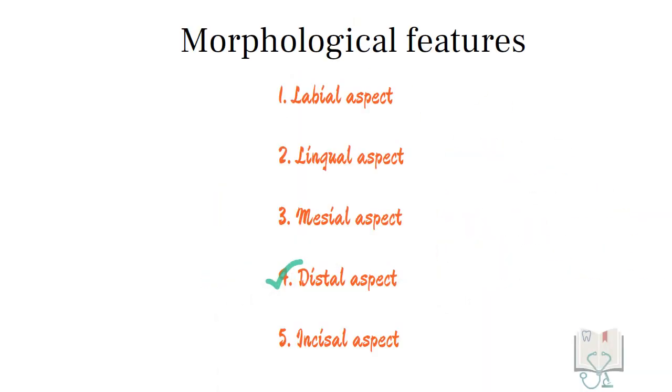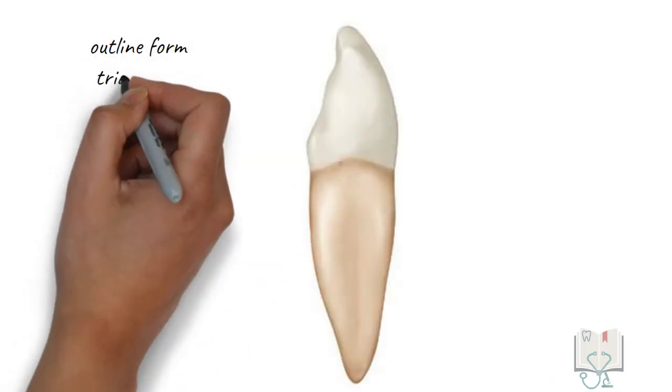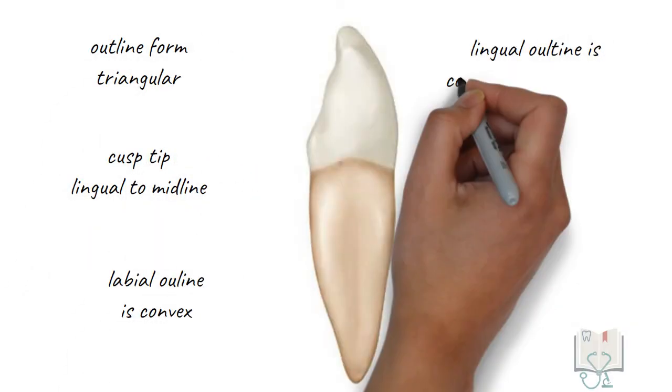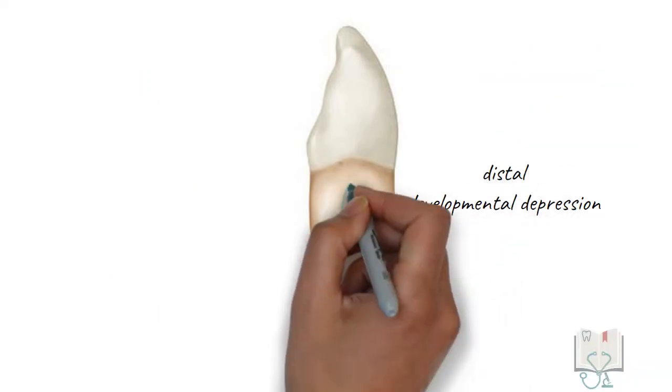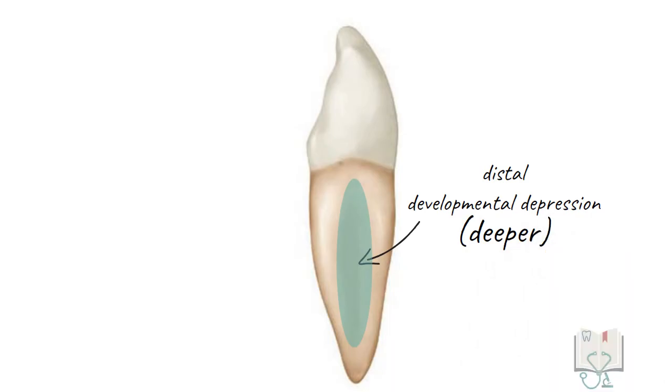Next, the distal aspect. All the features of the tooth from the mesial aspect are the same in the distal aspect as well. Though, the distal developmental depression present on the root is deeper than the mesial developmental depression.